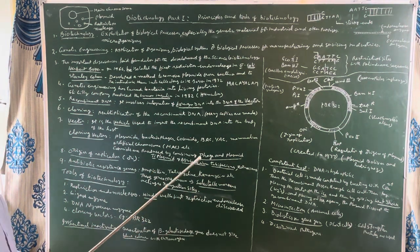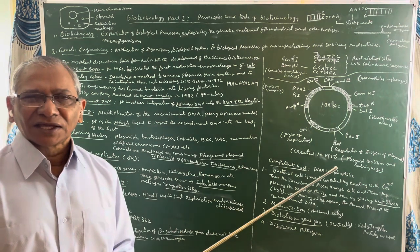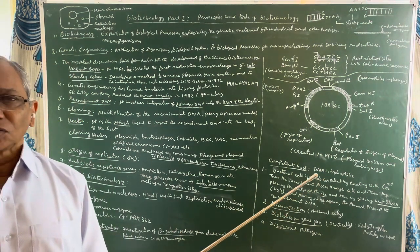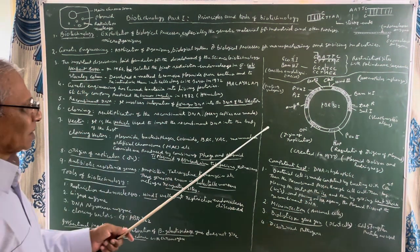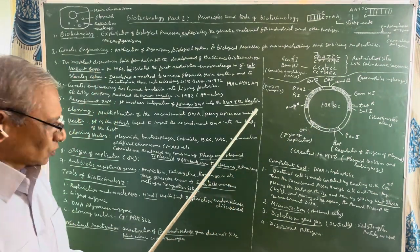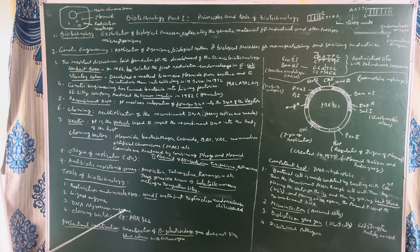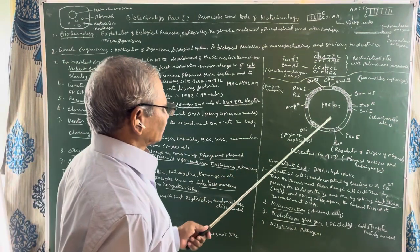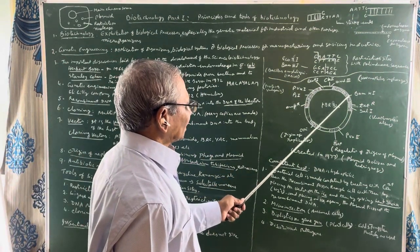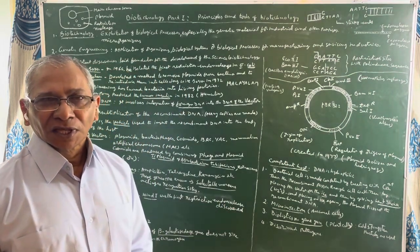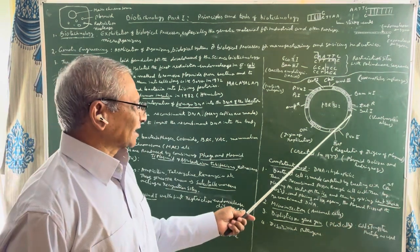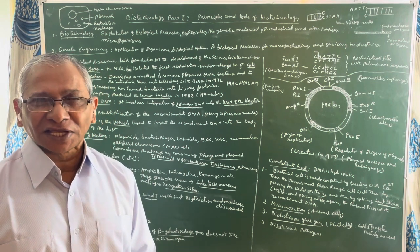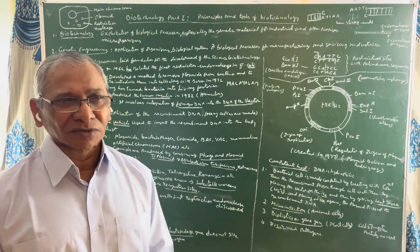Cloning vectors are used to carry foreign DNA into the body of the host for amplification or multiplication. PBR322 is one artificial cloning vehicle. The term insertional inactivation is important: if we introduce a foreign gene into the tetracycline resistant gene, the bacteria are no longer resistant against tetracycline and that antibiotic can easily kill those bacteria.